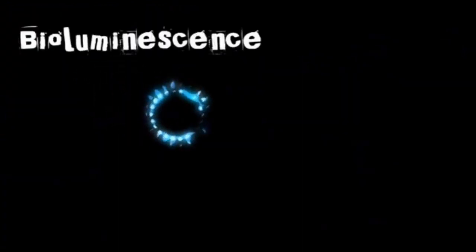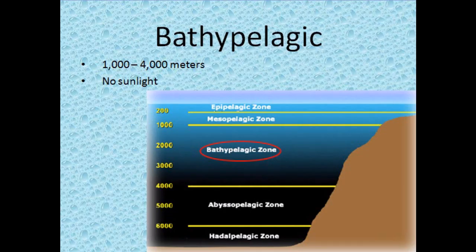Another adaptation many animals have in the deep sea is the ability to bioluminesce. This emission of light is thought to be found in about 90% of deep sea organisms. The next 1,000 to 4,000 meters is the bathypelagic zone, which is the largest zone and is too deep for sunlight to reach.